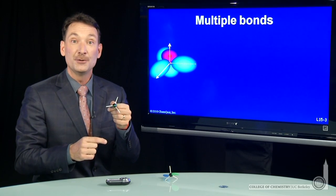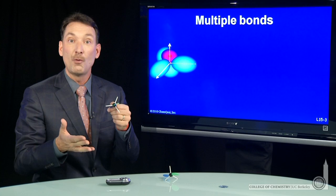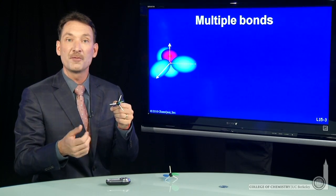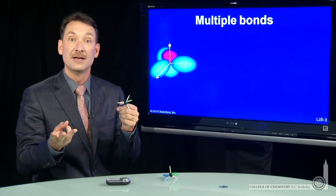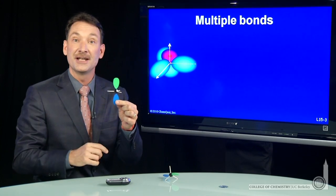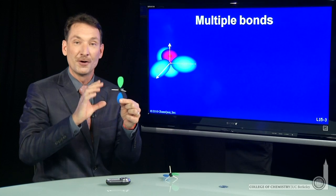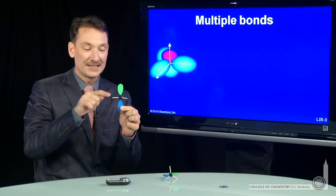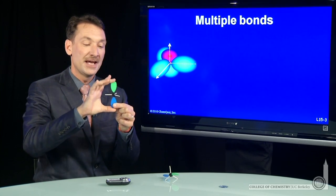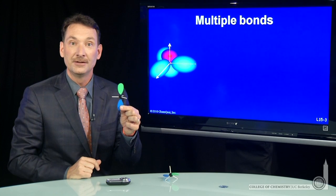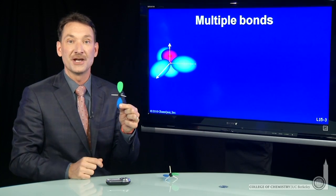Now, sp2 hybrids leave behind one p. Sp2 hybrids are formed from an s and two p's. So there's an unchanged p orbital that I represented here by this plus-minus lobe. So a p orbital left over, the z-axis here, and say a py orbital left over after the hybridization.